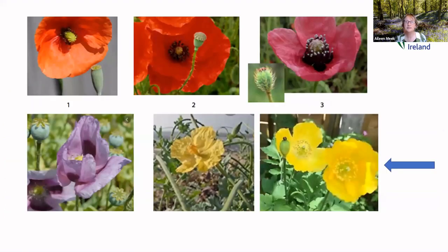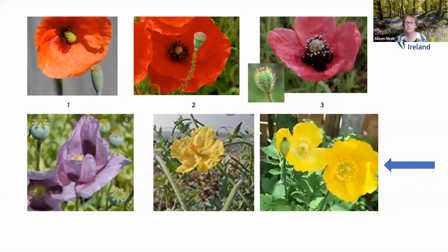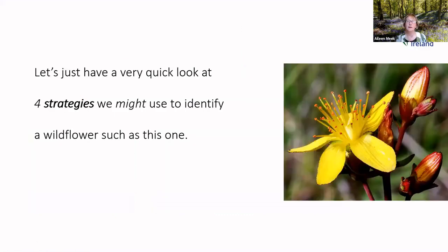For example, all of the poppies shown are described in Collins as introduced in antiquity or introduced with agriculture, except for the Welsh poppy — indicated with a blue arrow — which is native in Wales, southwest England, and Ireland, and naturalized throughout the rest of the British Isles, especially in the north. So that one is considered native in certain parts of the British Isles. Now, with 1,500 natives, it still sounds daunting, so let's look at four strategies we might use to identify a wildflower.